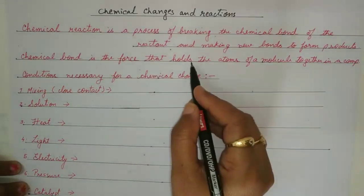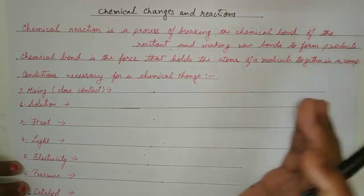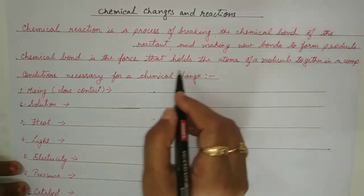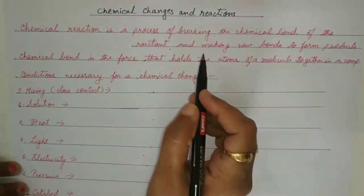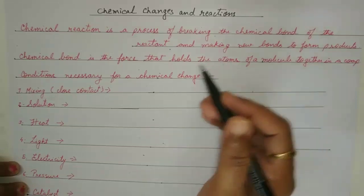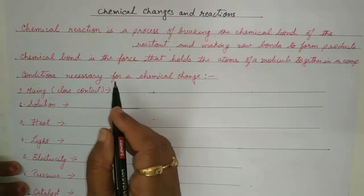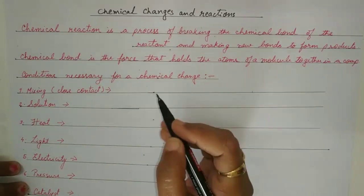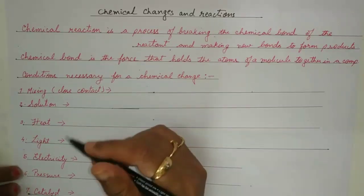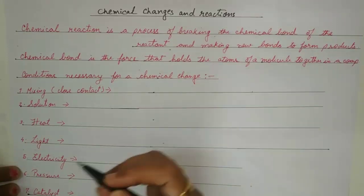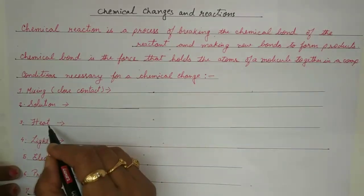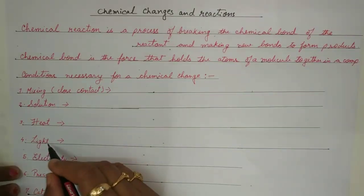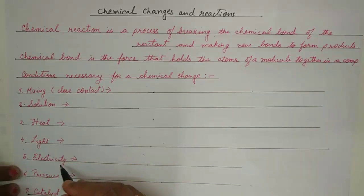A chemical bond is the force that holds the atoms of a molecule together in a compound. For a chemical reaction to occur, there are certain conditions needed. I have noted down seven points: sometimes mixing them together or making a solution, supplying heat energy, in the presence of light, on passing electricity, under pressure, or with the help of a catalyst.